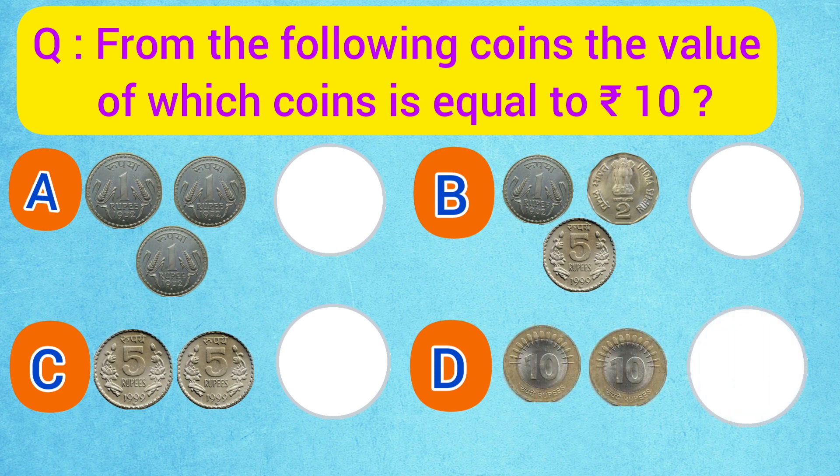So dear students, the correct answer is option C because 2 coins of 5 rupee are equal to 1 ten-rupee coin.